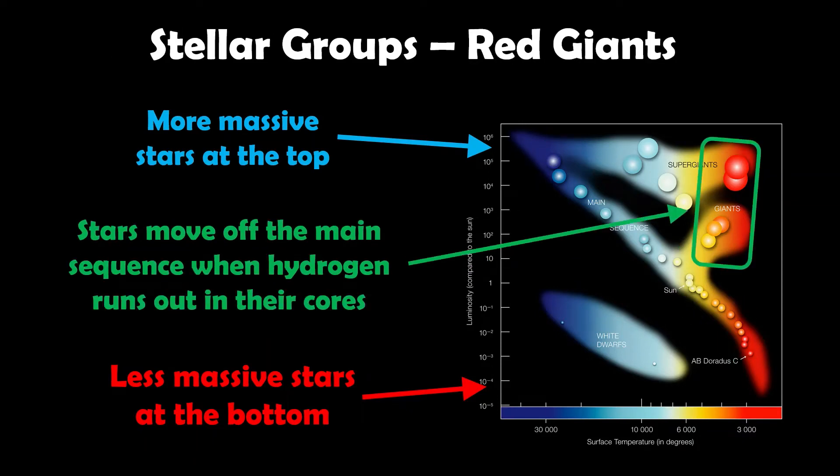When they finish the main sequence, when their hydrogen cores are depleted and they're no longer fusing hydrogen in their core, they will move off to another branch to the upper right, which is the red giant branch. Again, the bigger the star, the more towards the top. The more massive red giant stars are going to be higher up in that group and the less massive stars on the bottom.